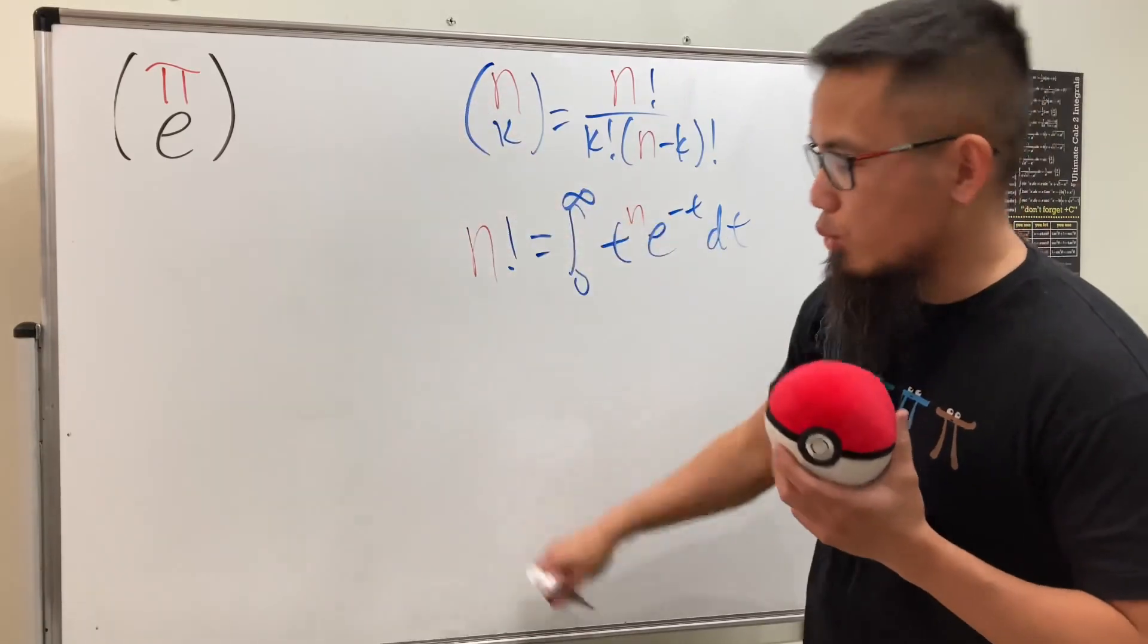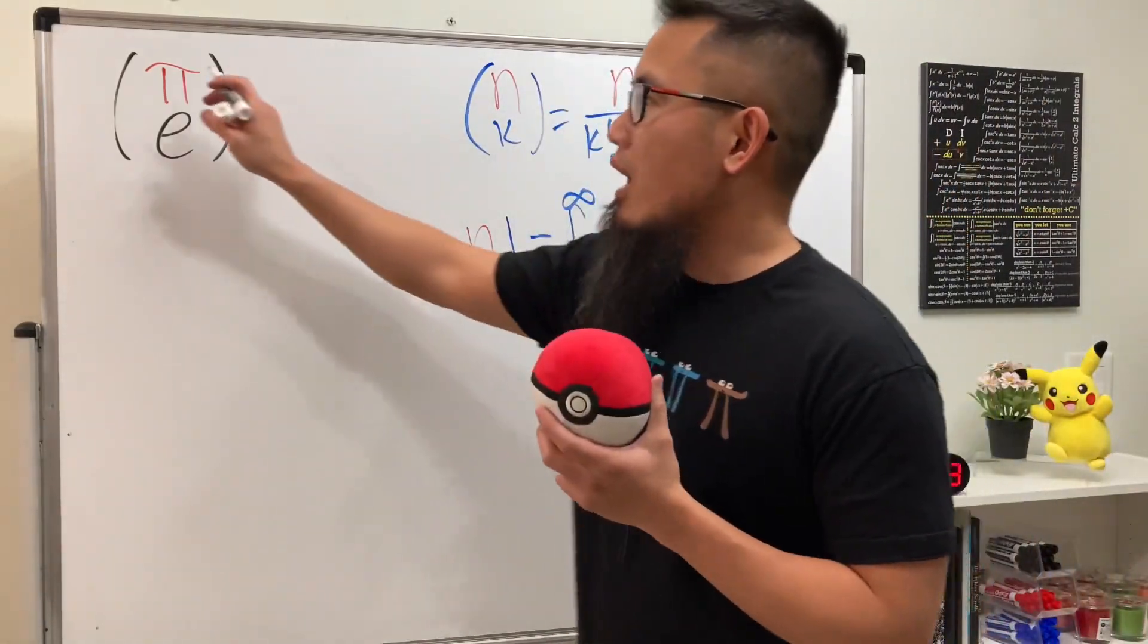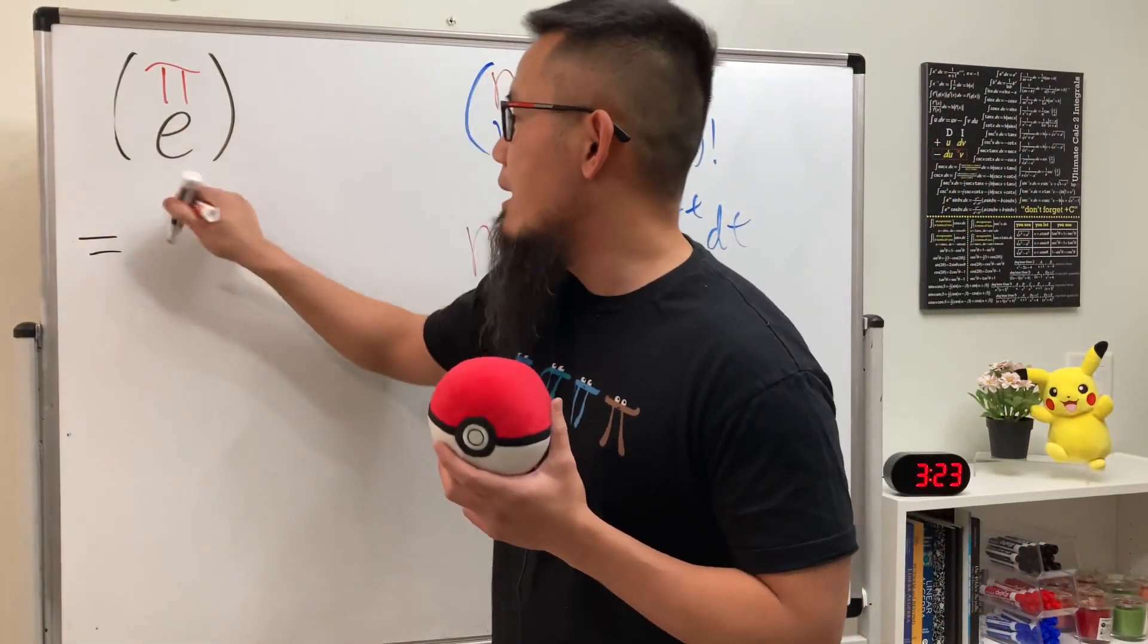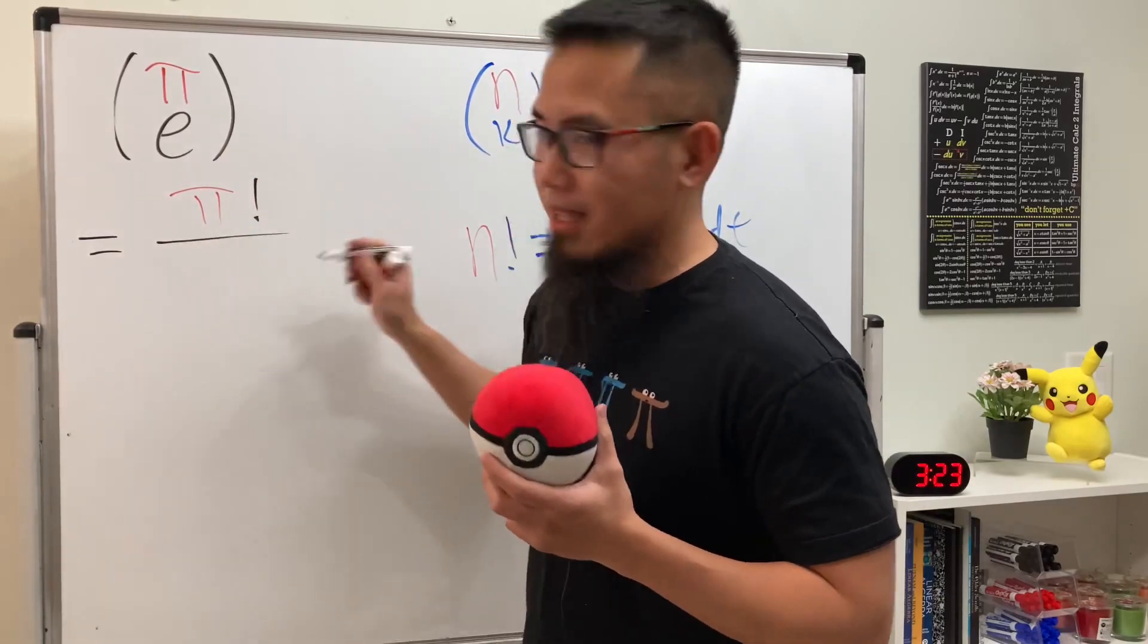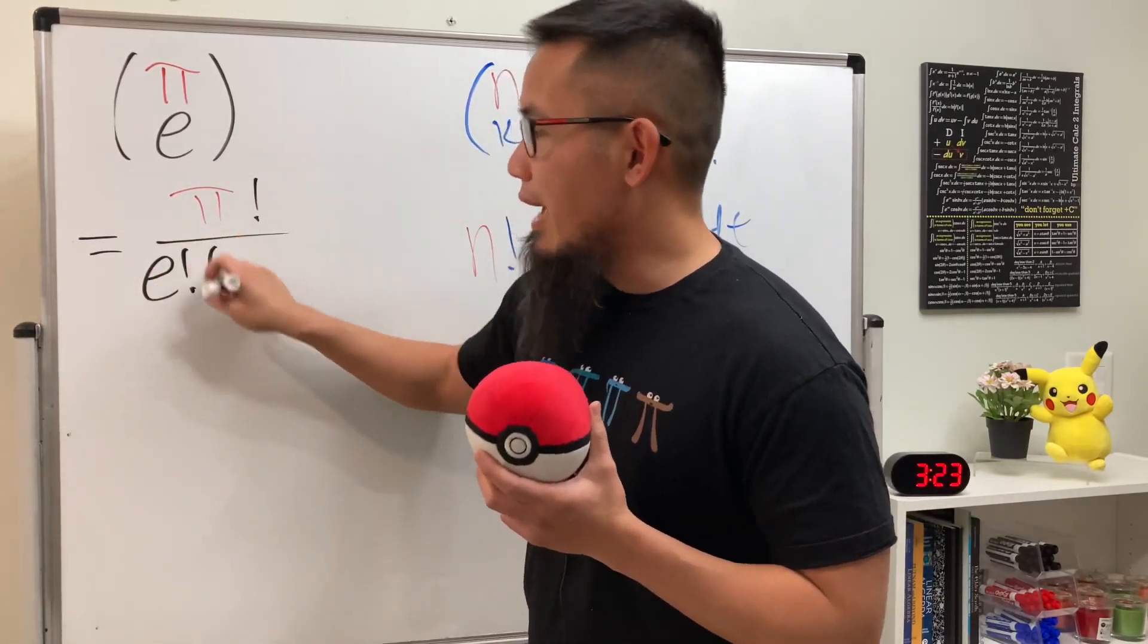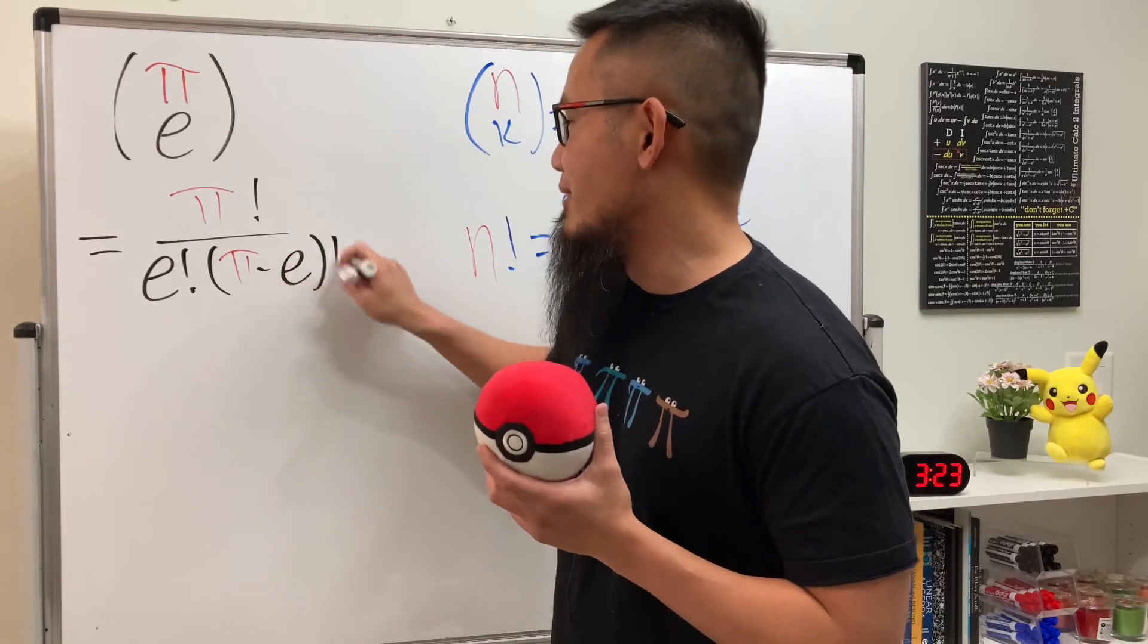We'll be using this together to do this, which is really cool. Check this out. When we have π choose e, on the top we'll get π factorial, on the bottom we'll have e factorial and π minus e factorial. Oh my goodness.